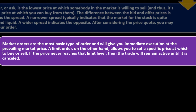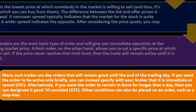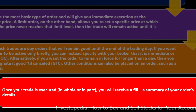After considering the price quote, market orders are the most basic type of order and give you immediate execution at the prevailing market price. A limit order allows you to set a specific price at which to buy or sell; if the price never reaches that level, the trade remains active until cancelled. Many such trades are day orders, good until the end of the trading day. You can specify the order as immediate-or-cancel (IOC), or designate it good-till-cancelled (GTC). Other conditions such as stop-loss can also be placed on an order.